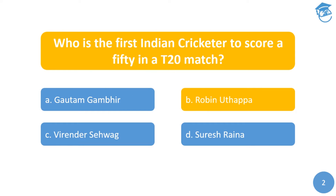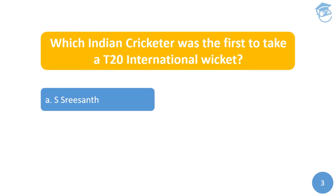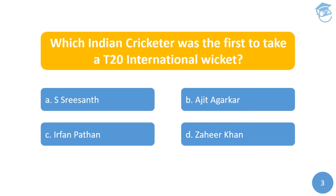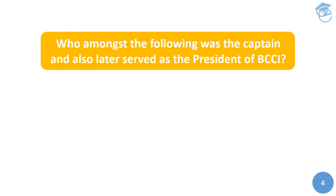The next question: which Indian cricketer was the first to take a T20 international wicket? Your options are: A) S. Sreesanth, B) Ajit Agarkar, C) Irfan Pathan, or D) Zaheer Khan. The answer is D) Zaheer Khan. This came in the first T20 match India played against South Africa at Johannesburg on the 1st of December 2006, and Zaheer took the wicket of South African opener Loots Bosman.